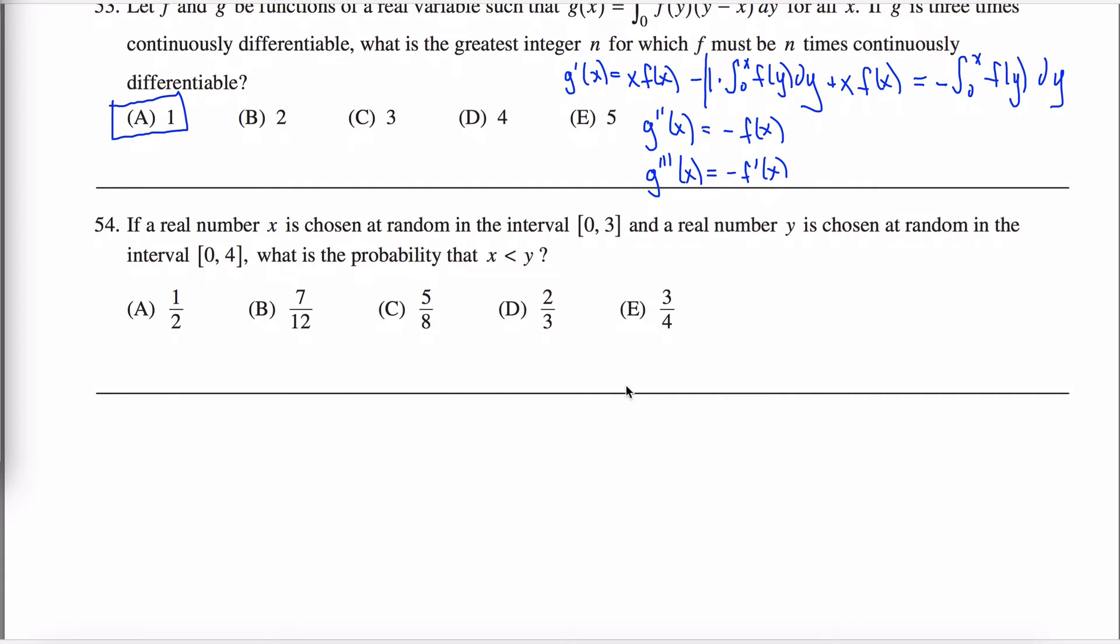That's a pretty easy problem, and they seem to be getting harder as you go on. What's going on here is I am choosing a number at random in the interval from zero to three, and then another number from the interval zero to four. And I want to know, what is the probability that the first number I choose is less than the second number I choose?